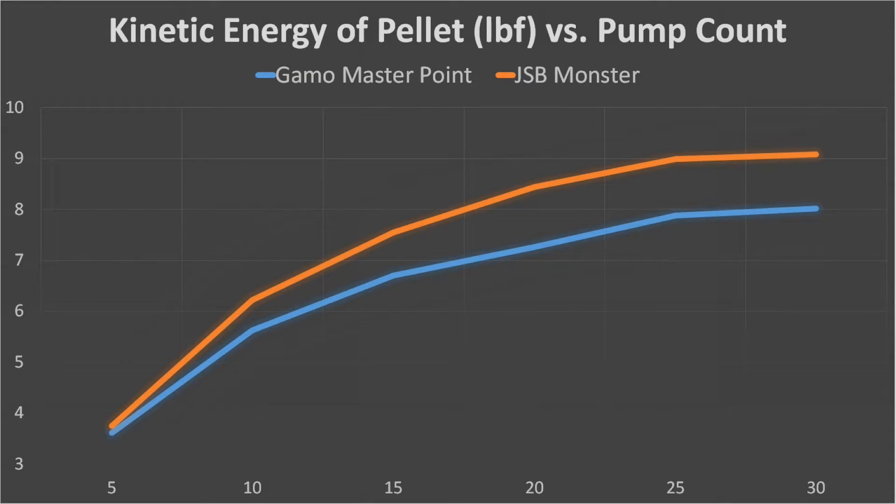Heavier objects are more efficient at cutting through air than lighter ones. Well, that's true for longer distances. The velocity close to the muzzle where we tested it should not be affected by aerodynamics. Instead, I think it has more to do with the way the air valve opens.